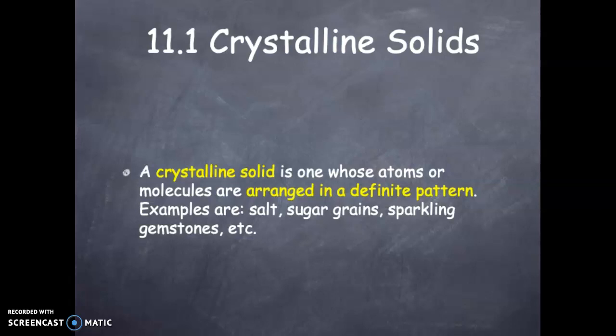Crystalline Solids, what are they? A crystalline solid is one whose atoms or molecules are arranged in a definite pattern. Examples are salt, sugar grains, sparkling gemstones, etc. These are crystalline solids.